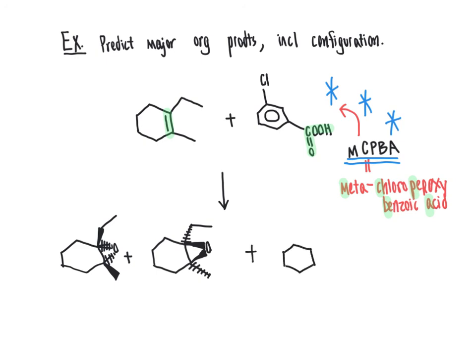The other organic product results from losing one of the oxygens from MCPBA, giving meta-chlorobenzoic acid — the peroxy oxygen has been donated over to form the epoxide. So you should now be comfortable writing out the mechanism for the reaction of a peroxy acid with an alkene, and predicting the major organic products including configuration — showing the stereoselectivity of the reaction: that the configuration is retained, groups that are cis remain cis, and groups that are trans remain trans in the final product.